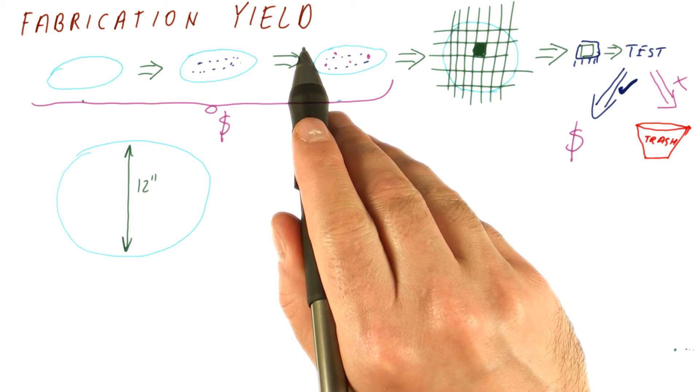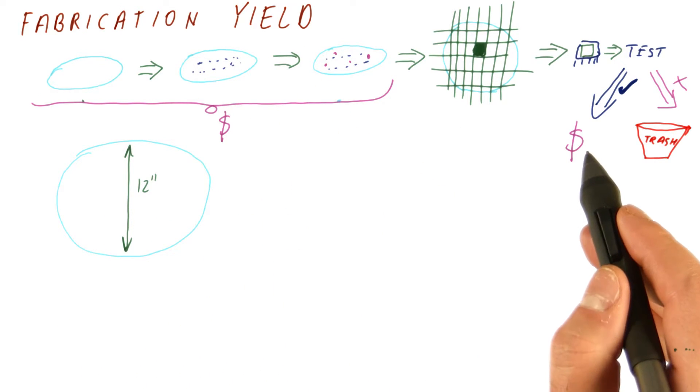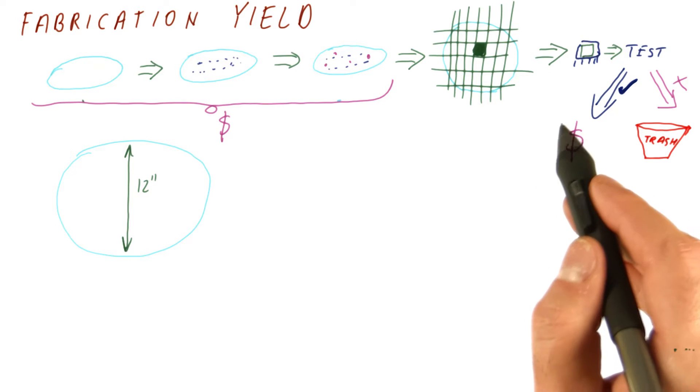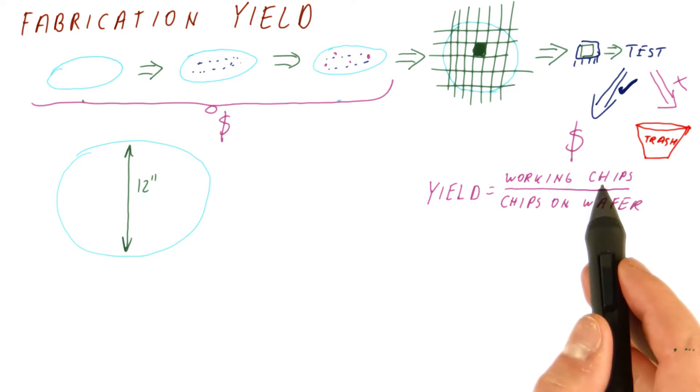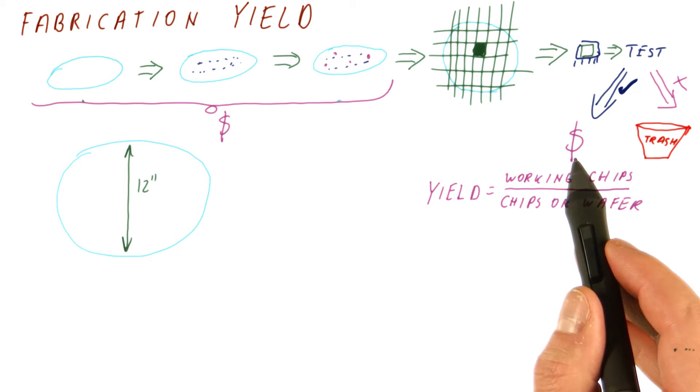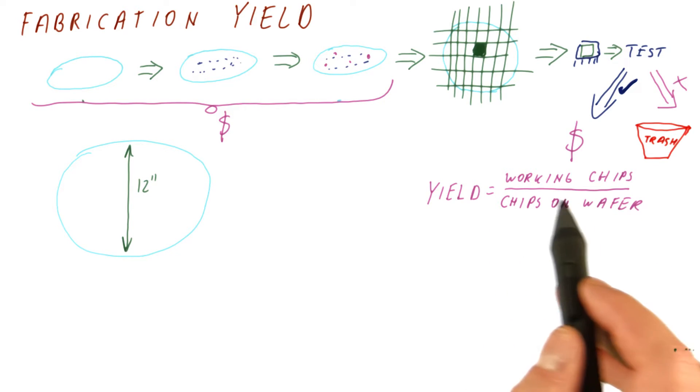Let's talk about the fabrication yield, which is the percentage of chips at the end that we get to sell. The yield is the number of working chips we get at the end divided by the total number of chips that we actually had on a wafer.